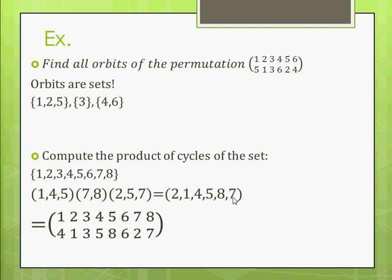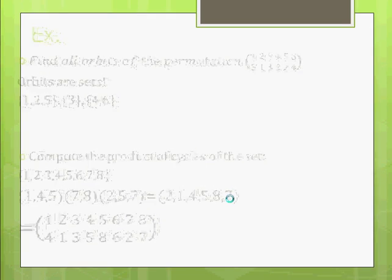I hope that's starting to make sense. If it can be written as one cycle, it's a cycle. If it can't be written as one cycle, if you need two or more, then it's not a cycle.